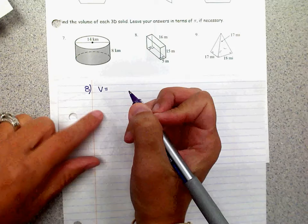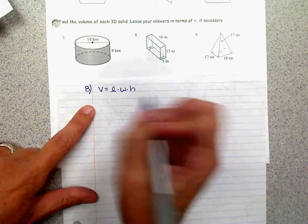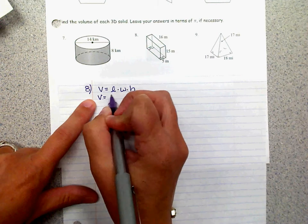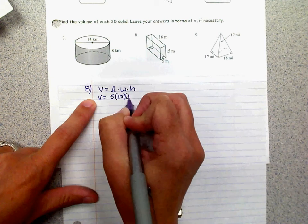The first one is just length times width times height, which is probably what most of you are going to use. So that's just 5 times 15 times 16,